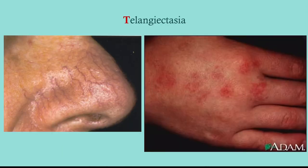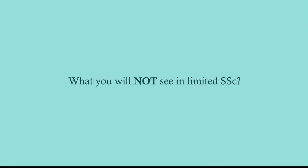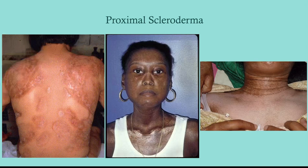Telangiectasias are non-specific but you should know what they look like — just little clumps of vessels under the skin. What will you NOT see in limited systemic sclerosis? Remember, limited is distal to the knee, distal to the elbow, and the face. If you have scleroderma more proximal than that — shoulders, chest, trunk — then you're dealing with diffuse systemic sclerosis.